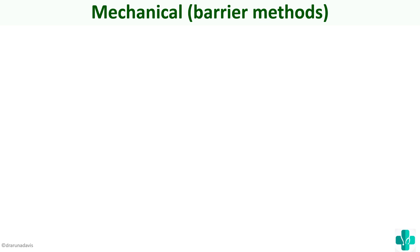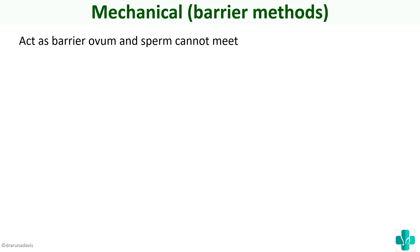Mechanical methods, also called barrier methods, mainly act as a barrier so that the ovum and sperm cannot meet and fertilization cannot occur.